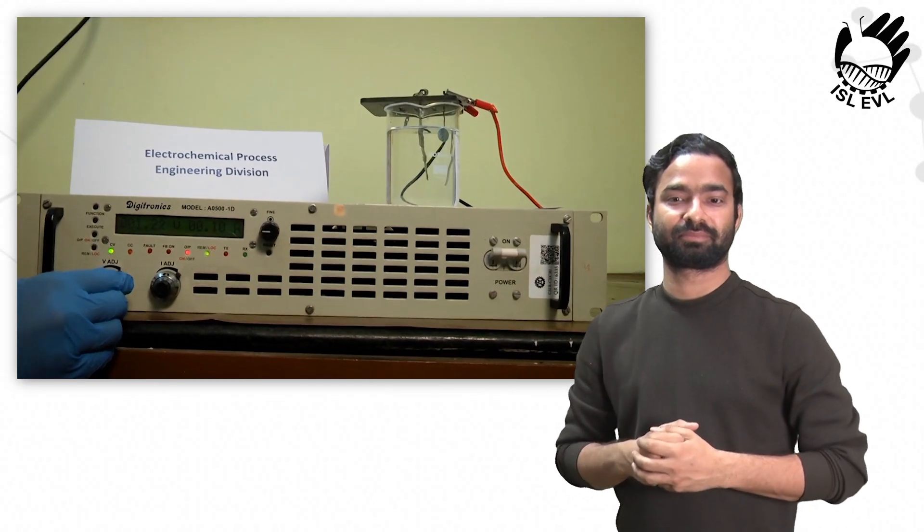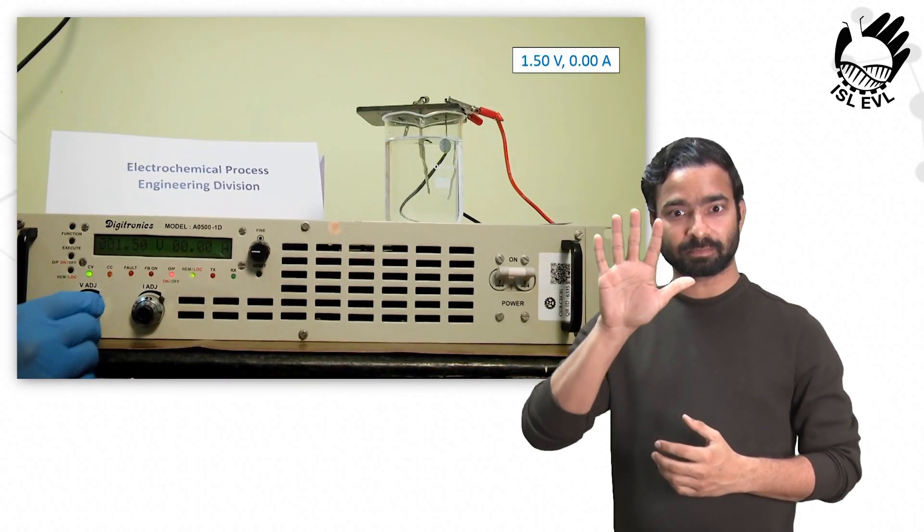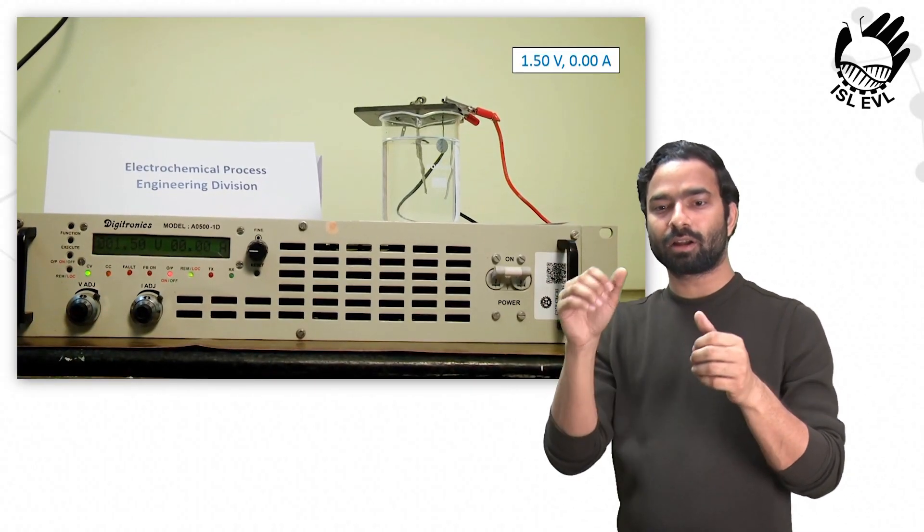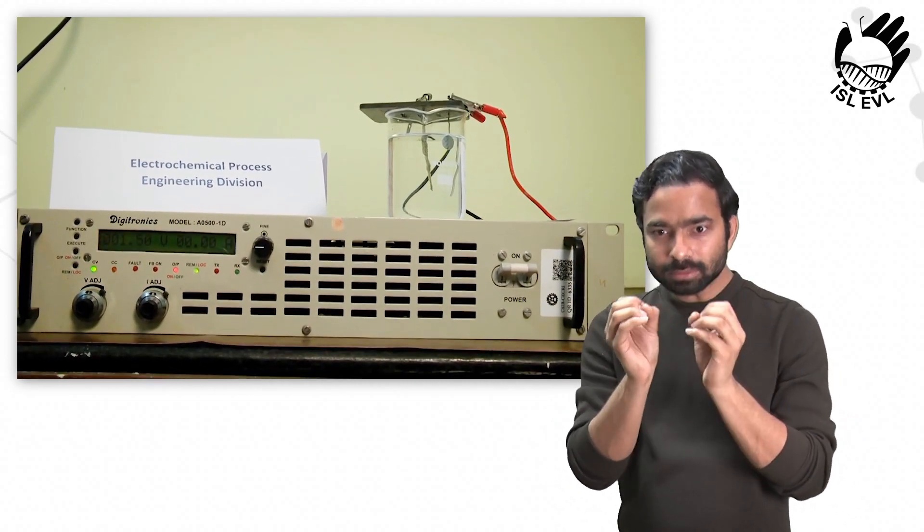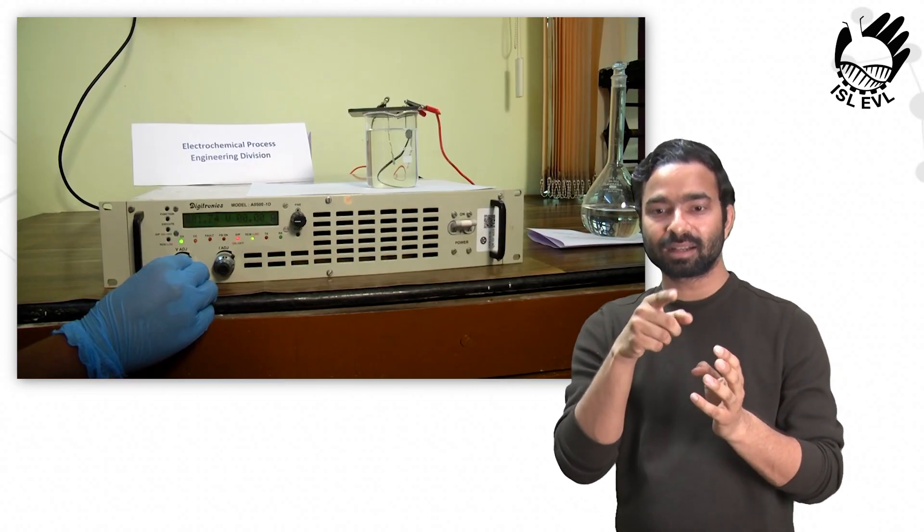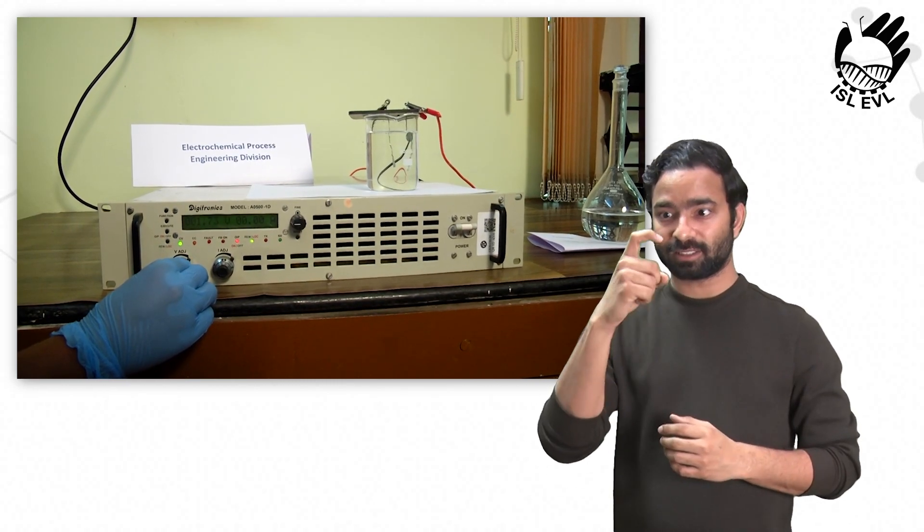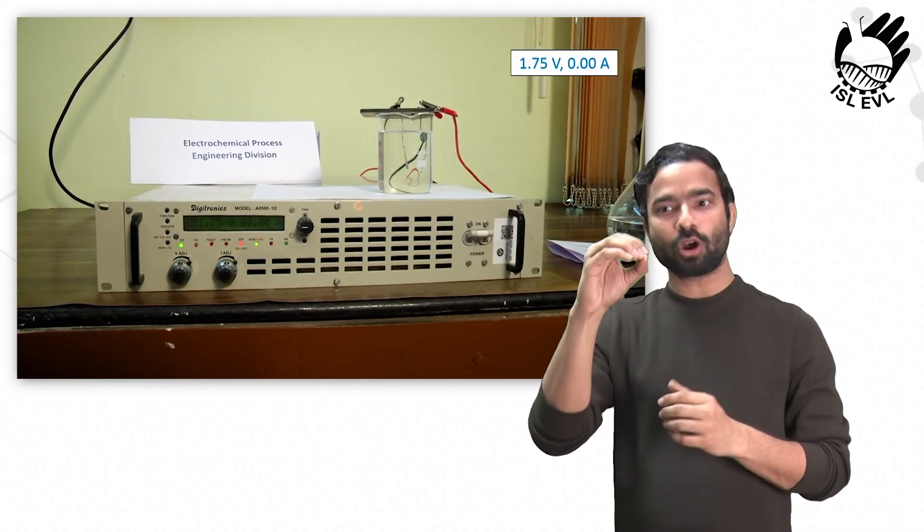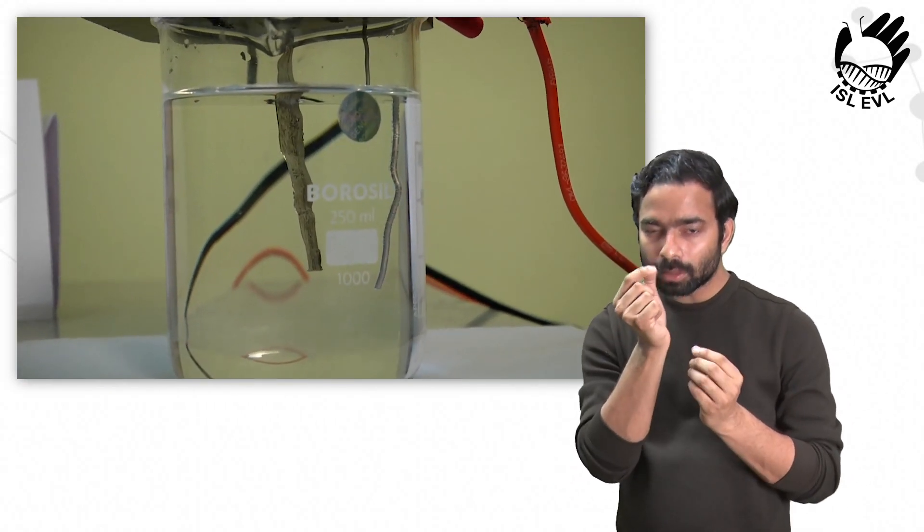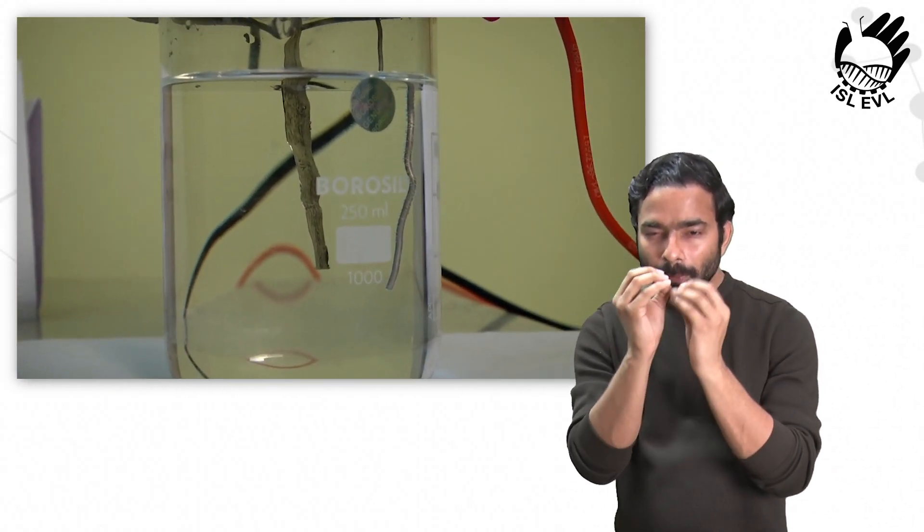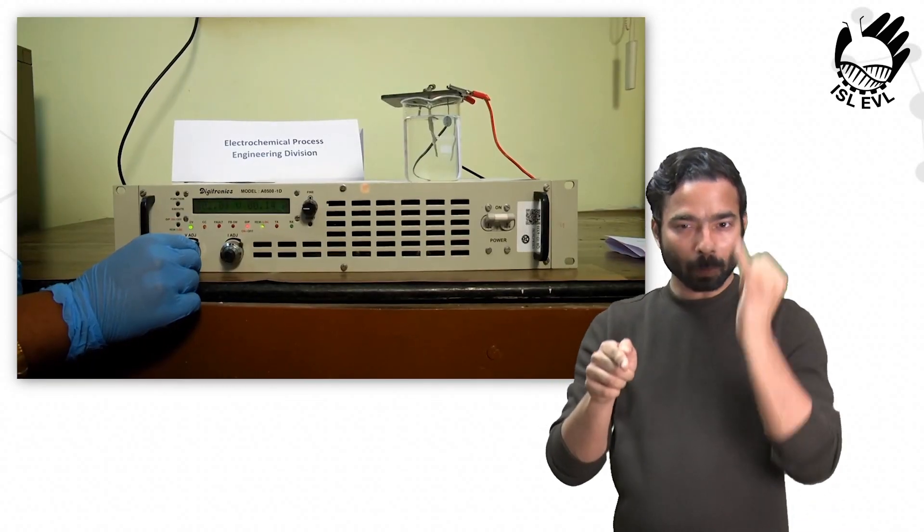As we slowly raise the cell voltage to 1.5 volt, the current is still recorded as zero, yet we can see minute bubble formation on the electrode surface. When the cell voltage is raised to 1.75 volt, still there is no change in the value of current, but we can spot larger bubble formation both in size and number on the electrode surface.